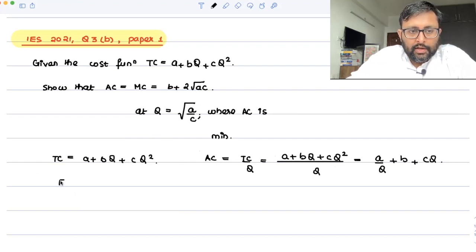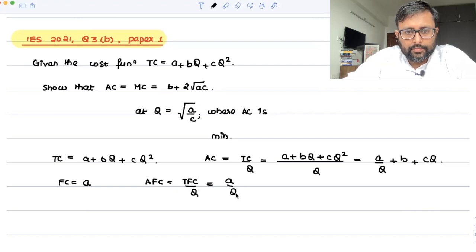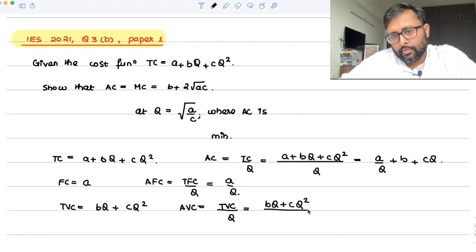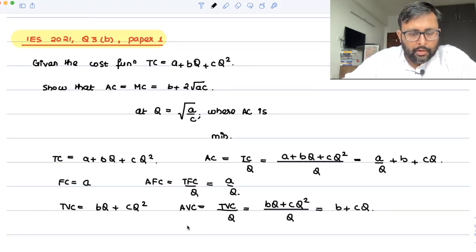What is the fixed cost part of this? A. So what is AFC? TFC upon q - not required in this question, but I'm just writing this out. What is the TVC part, which is dependent upon q? bq + cq². So what is AVC? TVC upon q: b + cq.